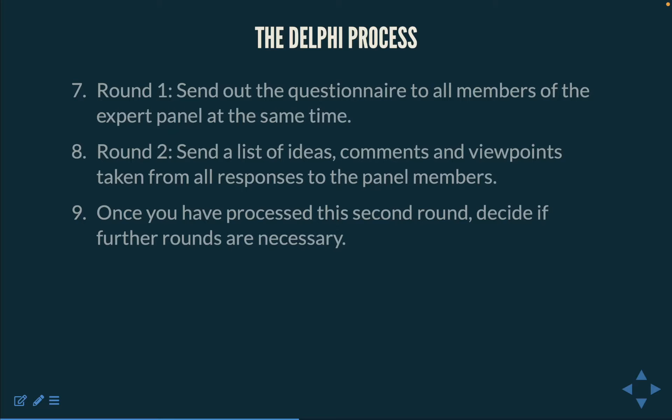Round 2: Send a list of ideas, comments, and viewpoints taken from all the responses of the panel members. Step 9: Ask the panel members to review the statements and assign a rank or numerical value demonstrating their level of agreement or disagreement with the given statement.